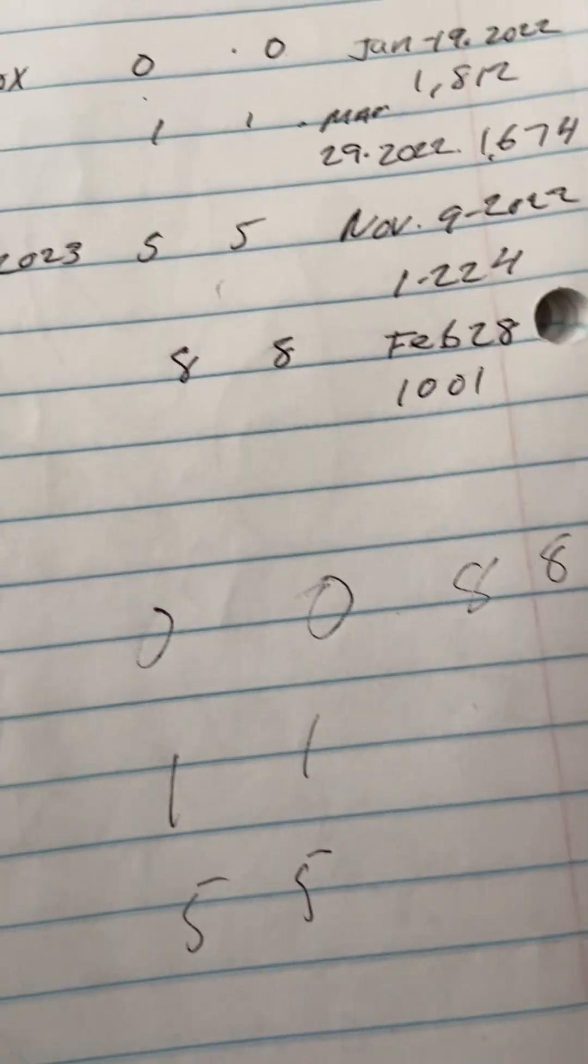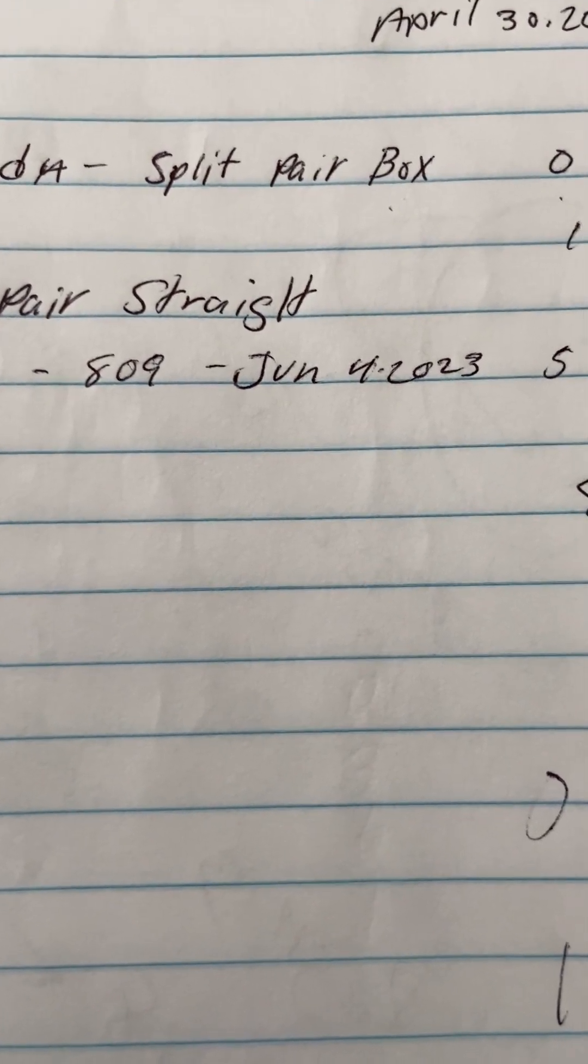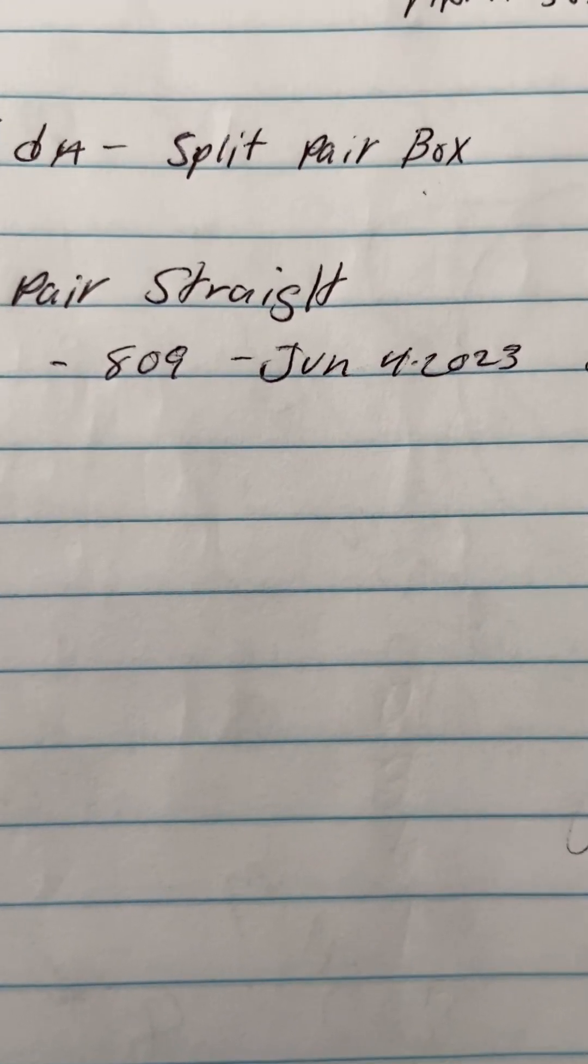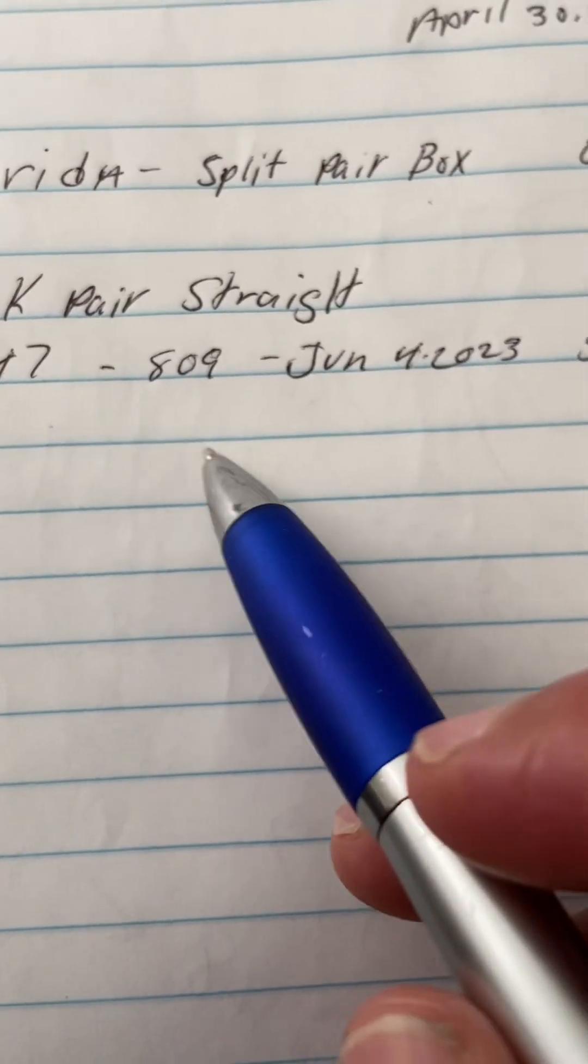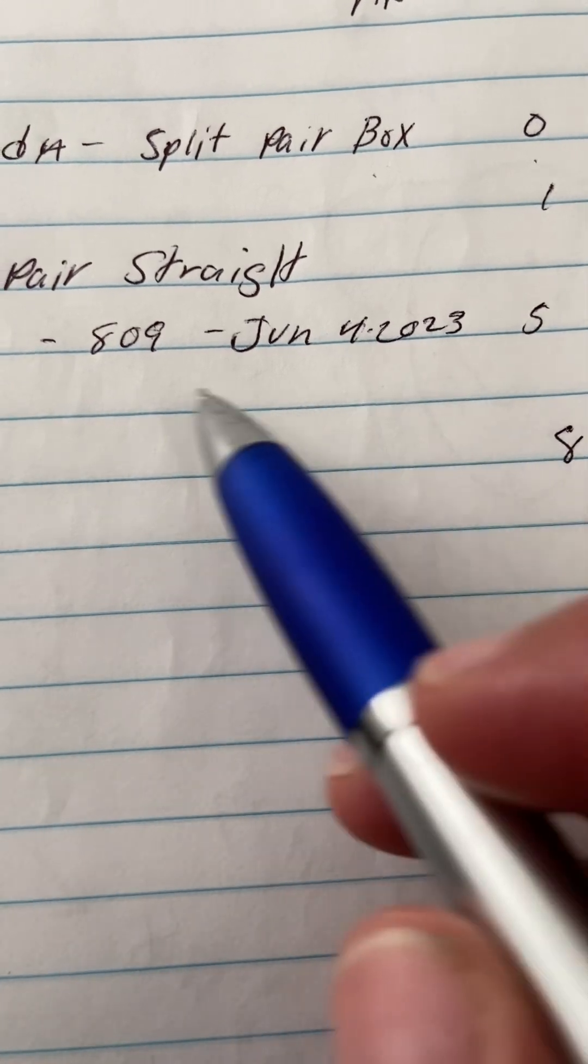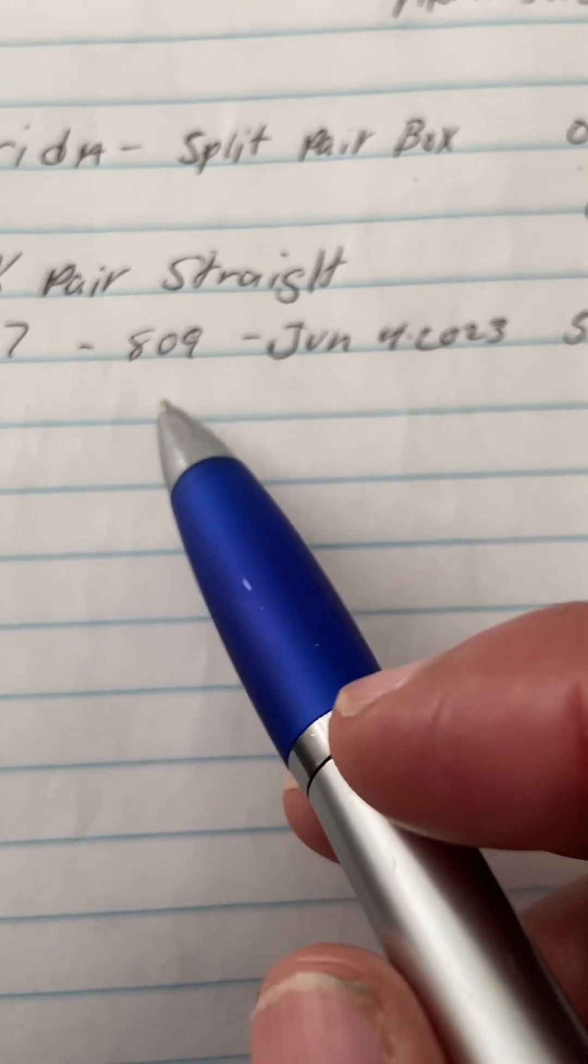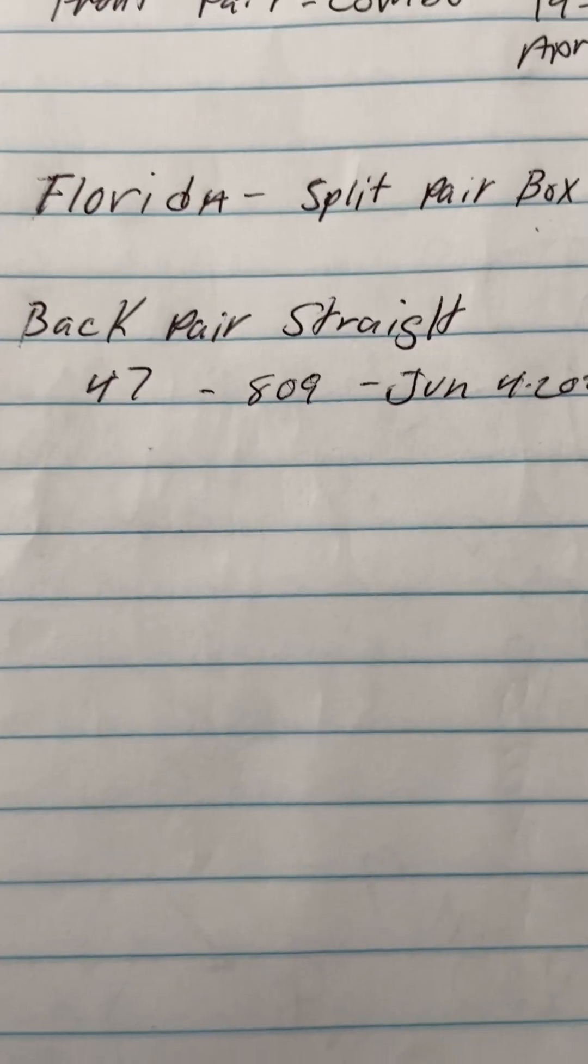Last seen - I don't know how accurate Lottery Post is, but they say they update their analytics maybe every 1.4 minutes. I'm not sure if that's really accurate, but back pair straight 47, last seen June 4th, 2023, 809 draws out so far.